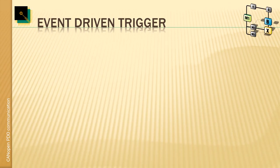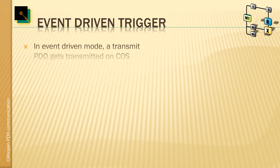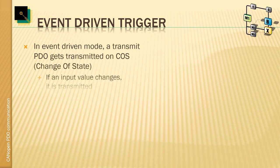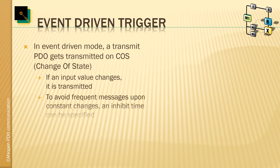The event-driven trigger uses COS detection — change of state detection. If an input value changes, then it gets transmitted. So here we only transmit data as it changes. However, if data has not changed in a long time, it will not be transmitted.